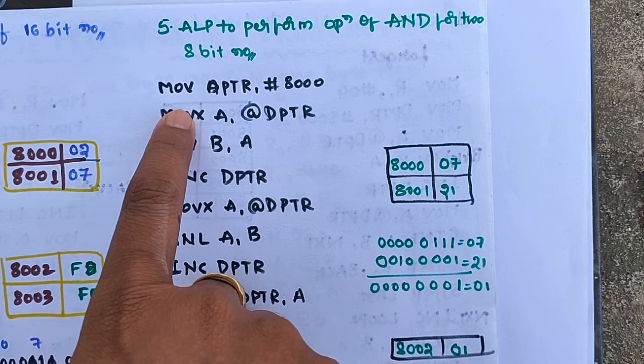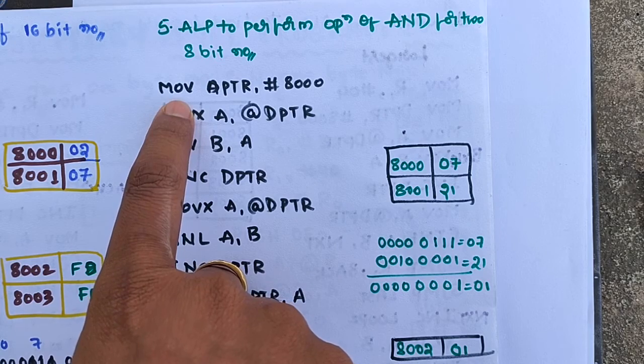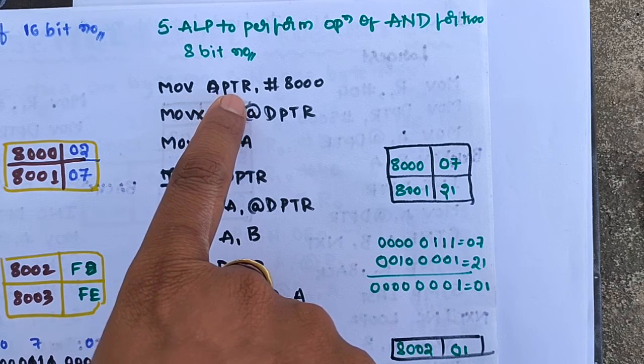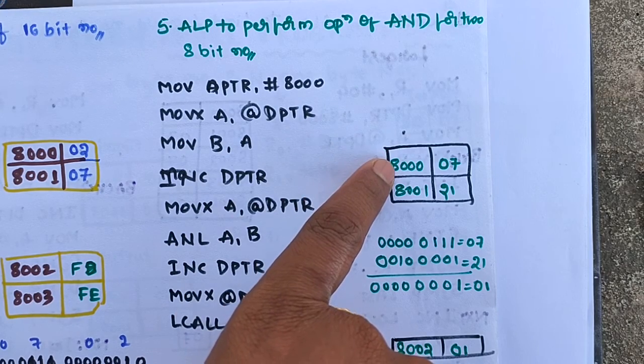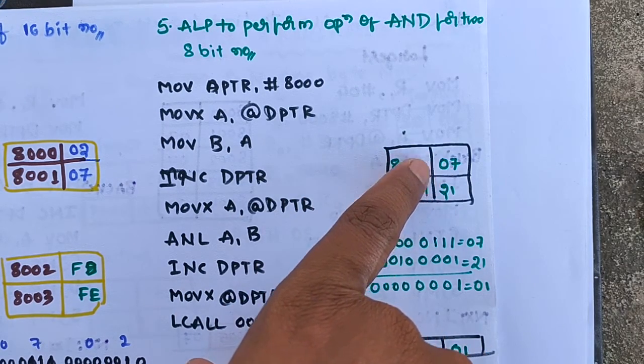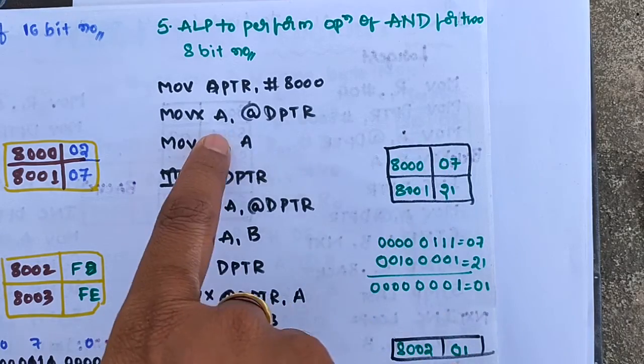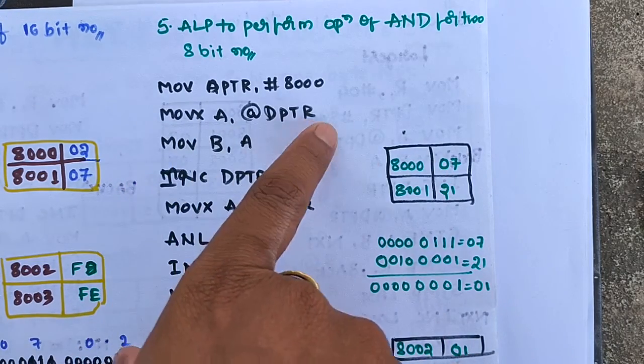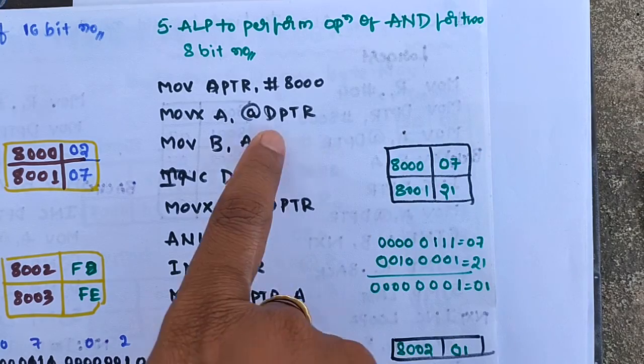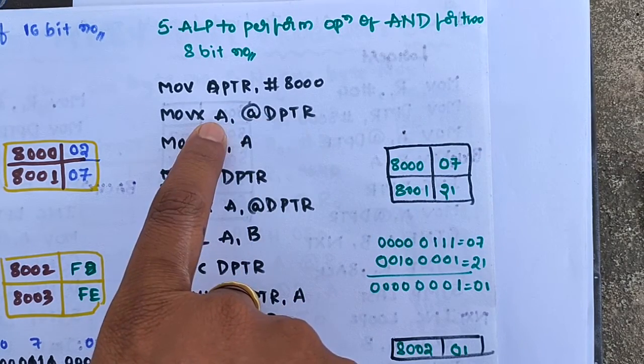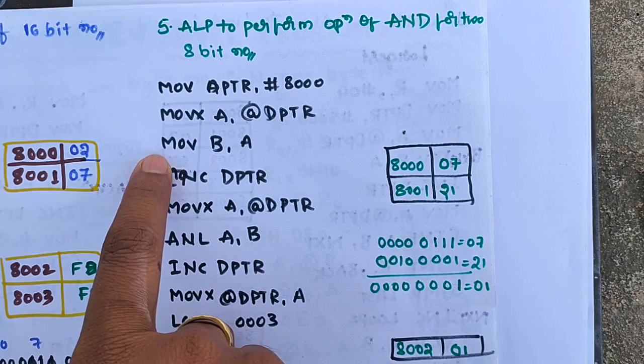Now I'll show the 8051 assembly language program. MOV DPTR, #8000 - the DPTR will be loaded with location 8000 and the content will be loaded to DPTR. Once loaded, the content transfers to the accumulator: MOV A, @DPTR.